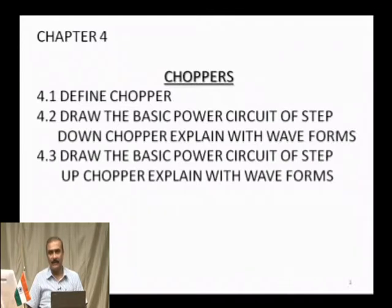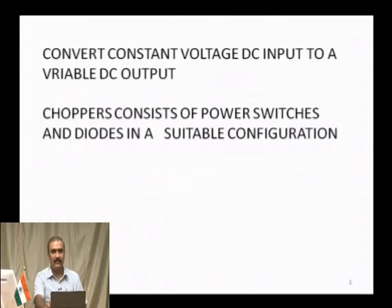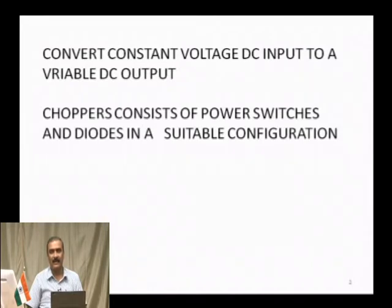The moment you convert AC to DC, there should be some device to vary DC also. You have the chopper as an alternative to vary the output voltage of DC. Chopper converts constant voltage DC input to variable DC output — from fixed DC to variable DC. You can see this as another application of power semiconductor devices. Chopper is one application; converter is another application.